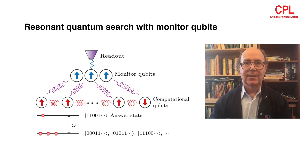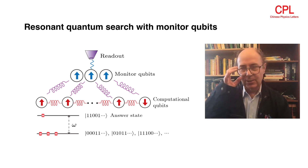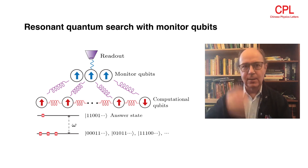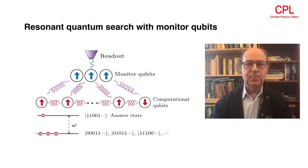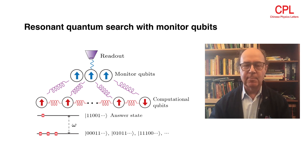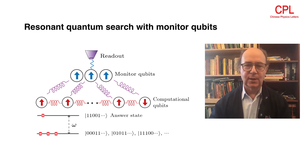So, in particular, if you have many qubits that are monitor qubits realized as spins, the spins generate a magnetic field, and that magnetic field can be measured.